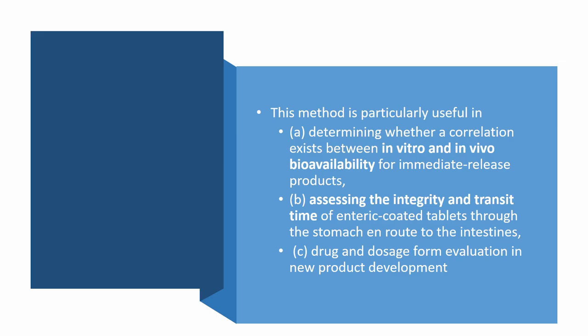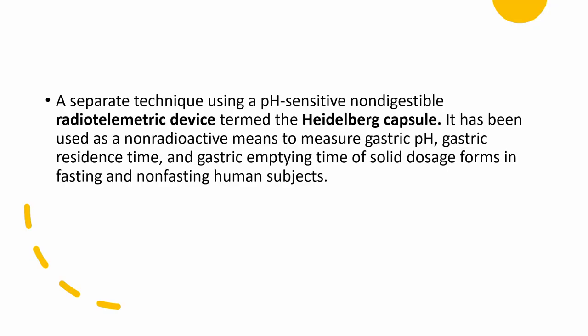Gamma scintigraphy can also be used to assess the integrity and transit time of enteric coated tablets, and it is primarily used in drug and dosage form evaluation in new product development. Another technique is the radio telemetric device termed the Heidelberg capsule — a miniature laboratory. Once swallowed, it transmits information regarding gastric pH, gastric residence time, and gastric emptying of solid dosage forms in fasting and non-fasting human subjects.